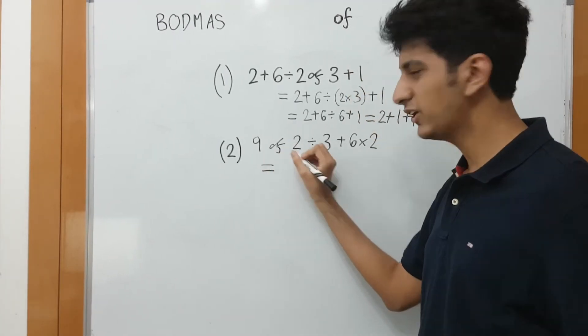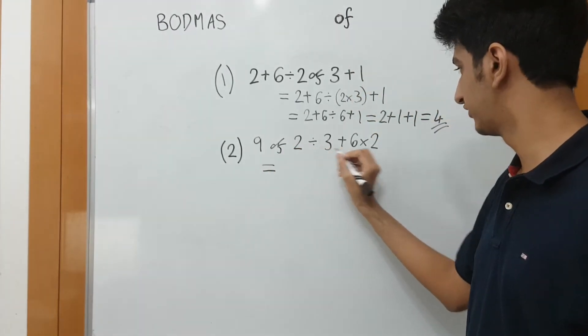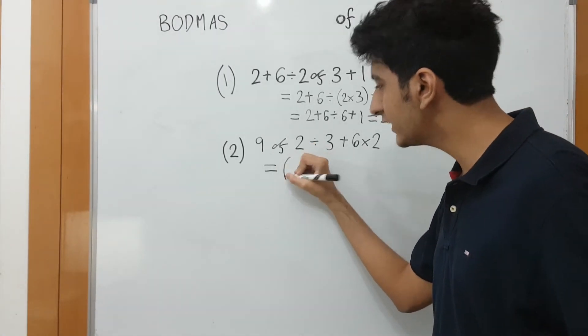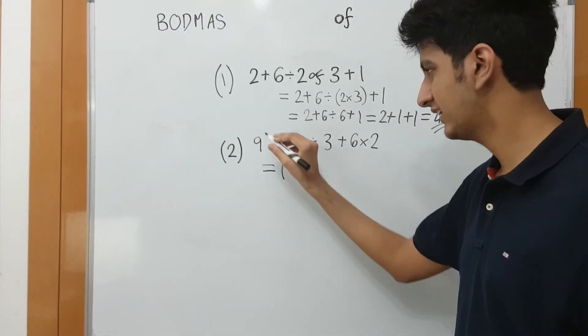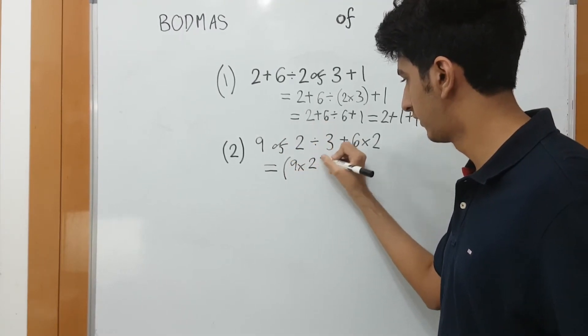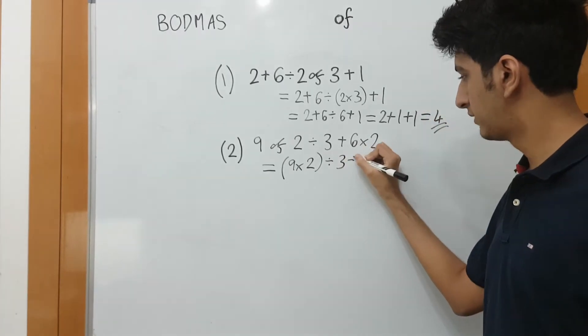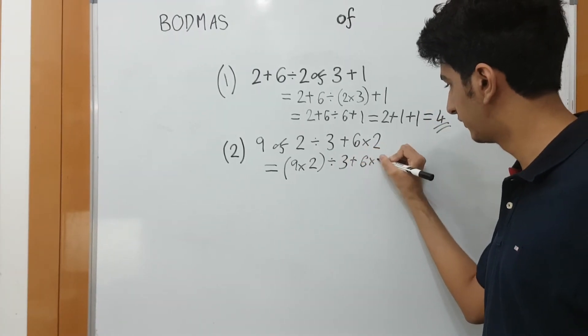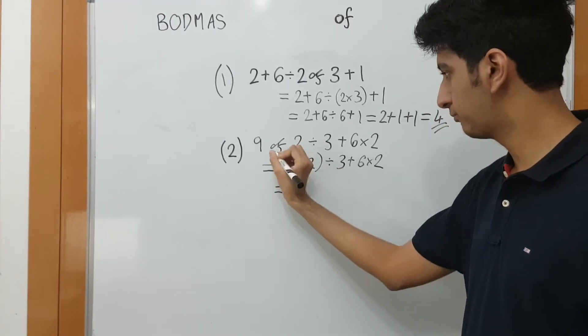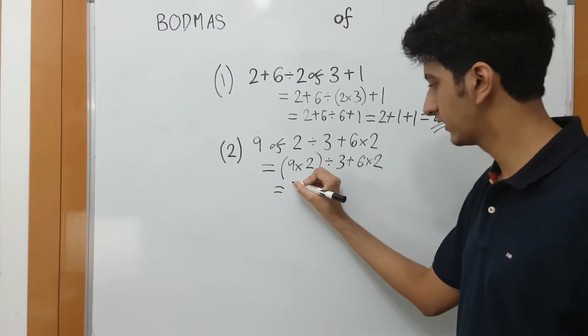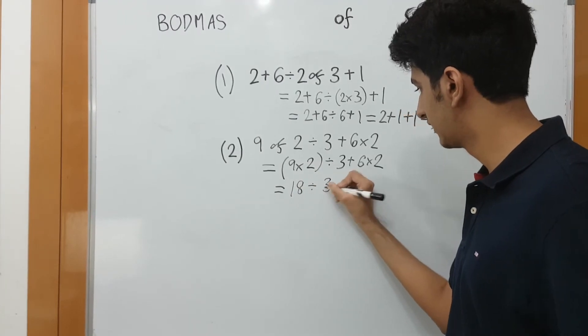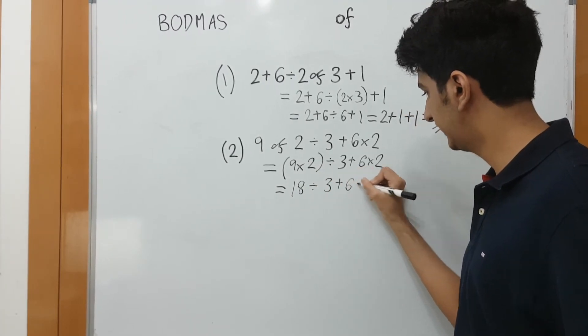Let's do it. So, we have, 9 of 2. Of division plus multiplication. Of will come again. So, replace the of with the multiplication sign and add brackets. 9 into 2 divided by 3 plus 6 into 2. First, we have to do this, which is of. And we have to do that first.